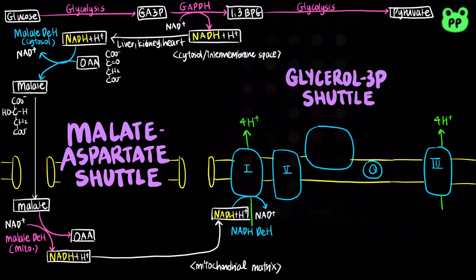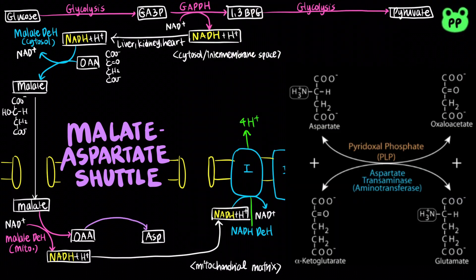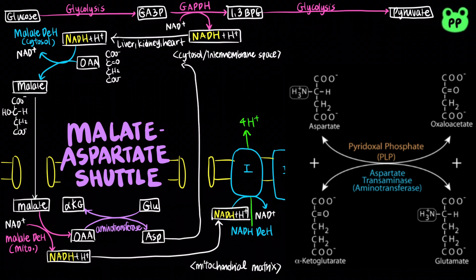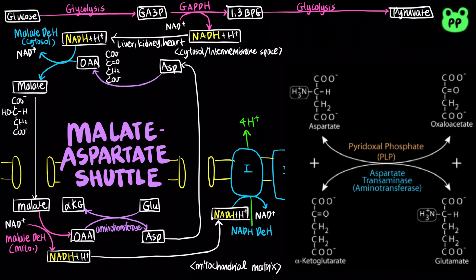Oxaloacetate is then converted to aspartate by aminotransferase, coupled to the deamination of glutamate to alpha-ketoglutarate. Aspartate is then transported out of the mitochondrial matrix and reconverted to oxaloacetate by aminotransferase in order to start another cycle of the shuttle.